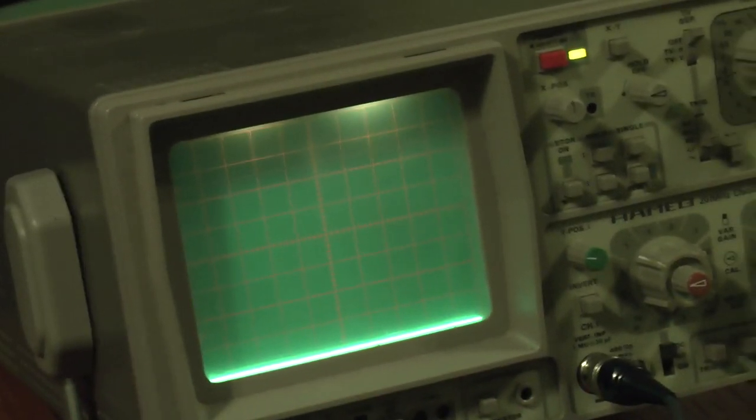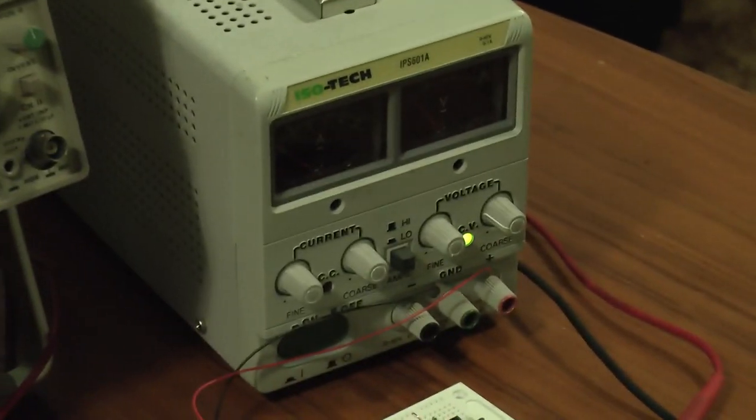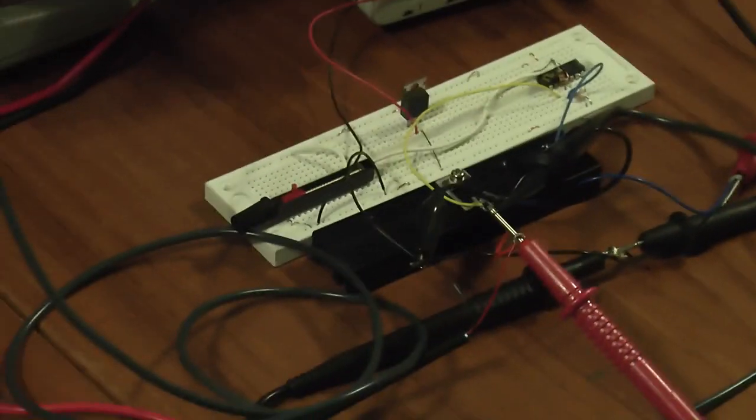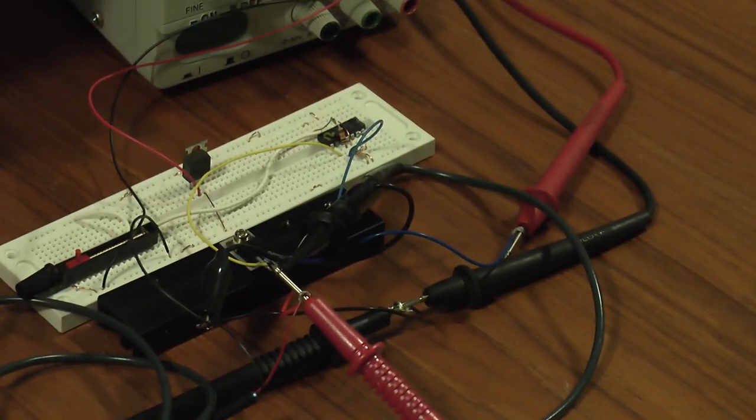What else we have? We've got the scope, my trusty old Hameg HM205, and there's that power supply there which is just running that. It's providing, I think, 20 volts. It's going to an 8 volt regulator there which is driving the dummy load circuit.